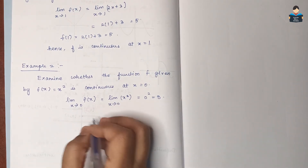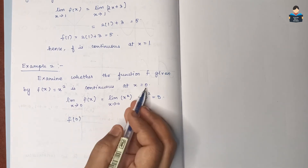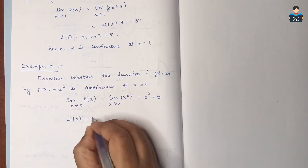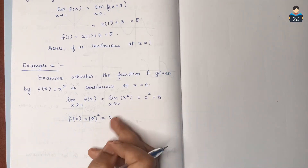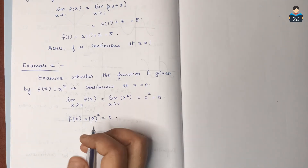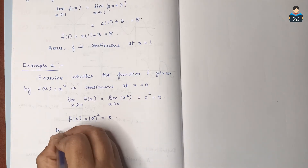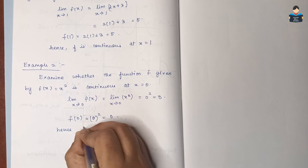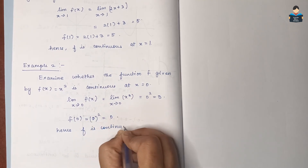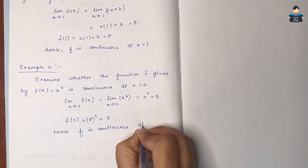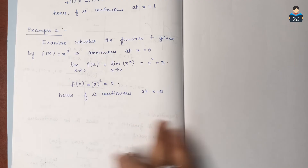f(0) is 0 squared, which is 0. So f(0) = 0. Since the LHL, RHL, and functional value are all the same, f is continuous at x = 0.